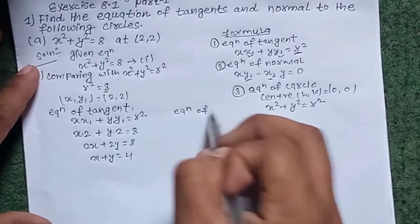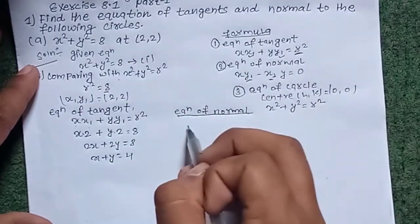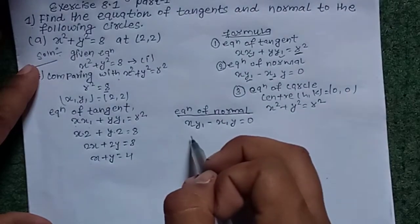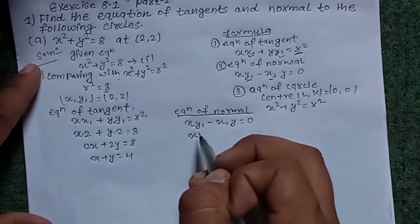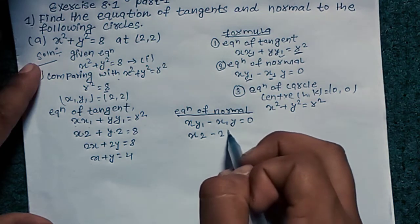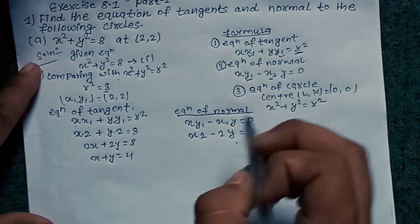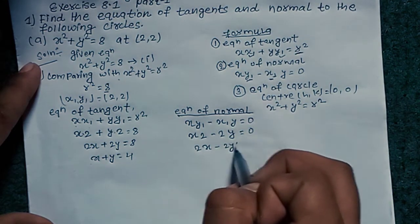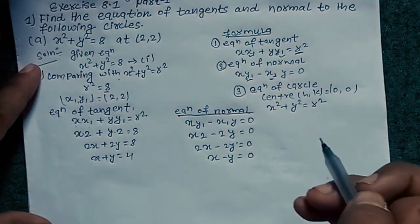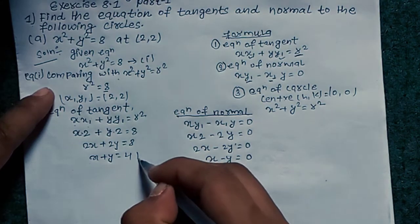Now equation of the normal: formula xy₁ - x₁y = 0. Substituting x₁ = 2 and y₁ = 2: 2x - 2y = 0. Taking 2 as common: x - y = 0. This is our required answer.